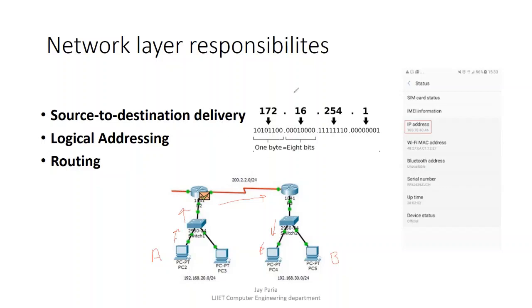In IPv4, numbers are represented in decimal. In the MAC address, numbers are represented in hexadecimal. In IPv4, all numbers are differentiated by dot notation, while in the MAC address, they are separated by a colon.